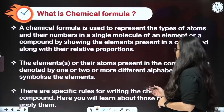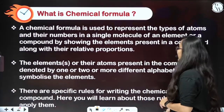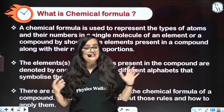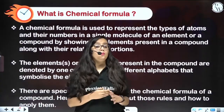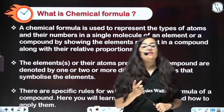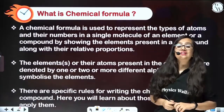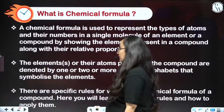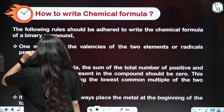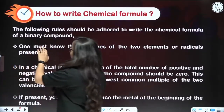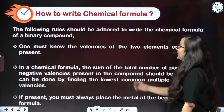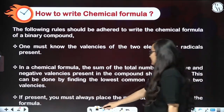There are specific rules for writing the chemical formula — we will learn about those rules. Now we are going to learn how to write a chemical formula and what the rules are for that. First and foremost, one must know the valencies of the two elements or radicals present.